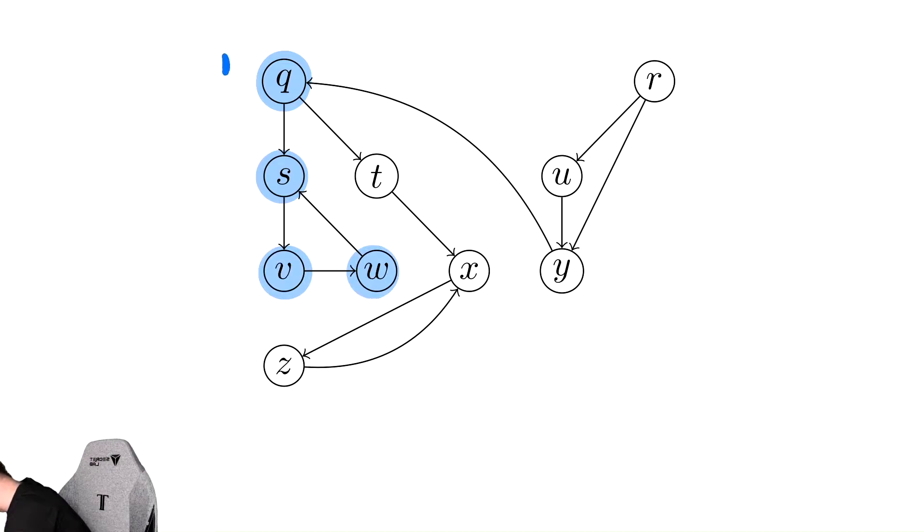Let's also fill in our discovery times. We start with a 1, and then a 2, and then a 3, and then a 4. We also should fill in our tree edges as we did that. We go q to s, s to v, and v to w. Notice I did that much faster. We also have this edge here which connects from w to an ancestor. We know it's an ancestor because of the fact that it is currently gray, so that is a back edge.